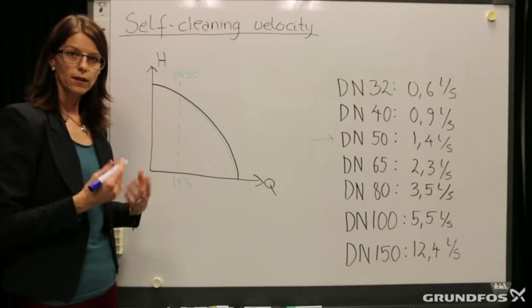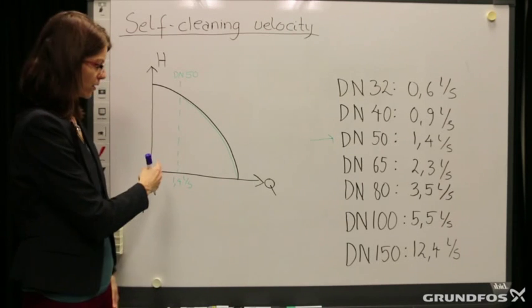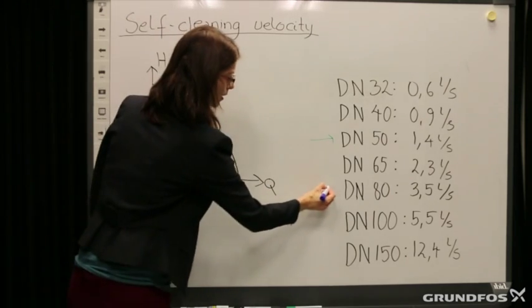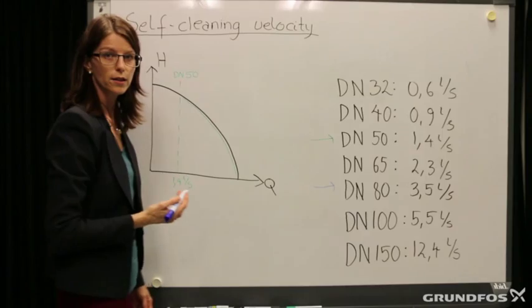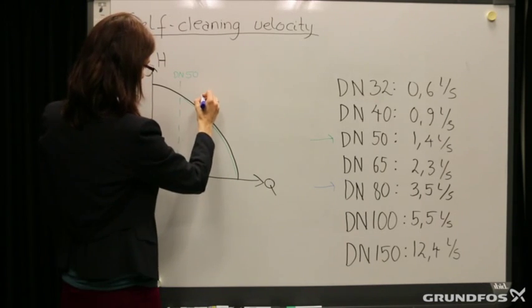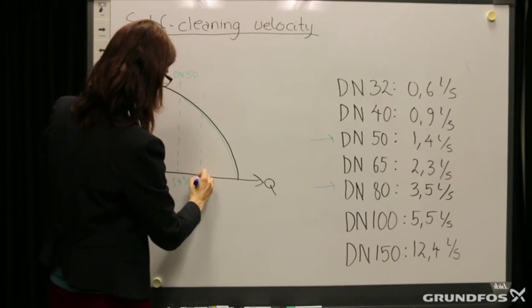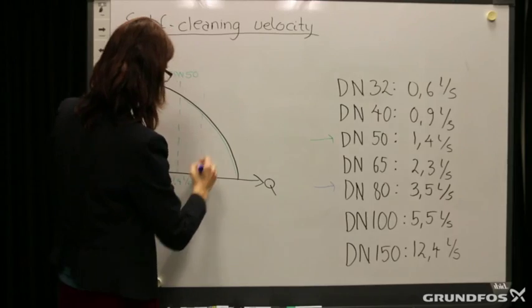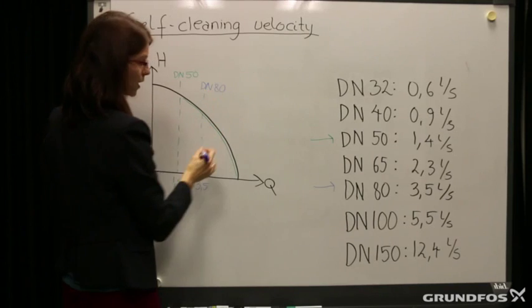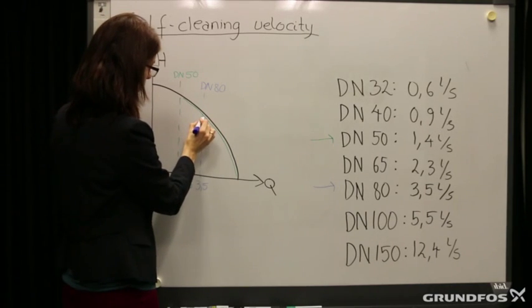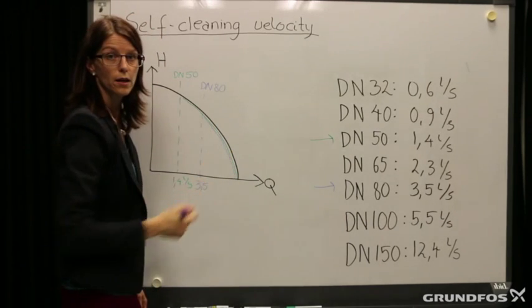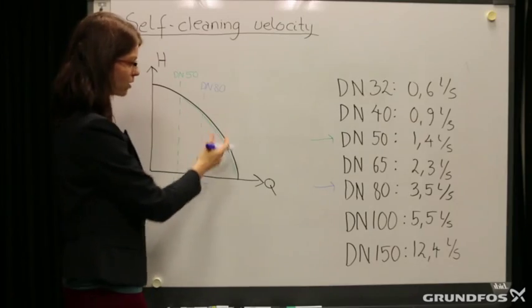The bigger the pipe size, the further to the right the borderline will move. For example, if the pipe diameter is DN80, the borderline will be further to the right at 3.5 liters per second, meaning the duty point when selecting a DN80 pipe must be in this range of the pump curve.